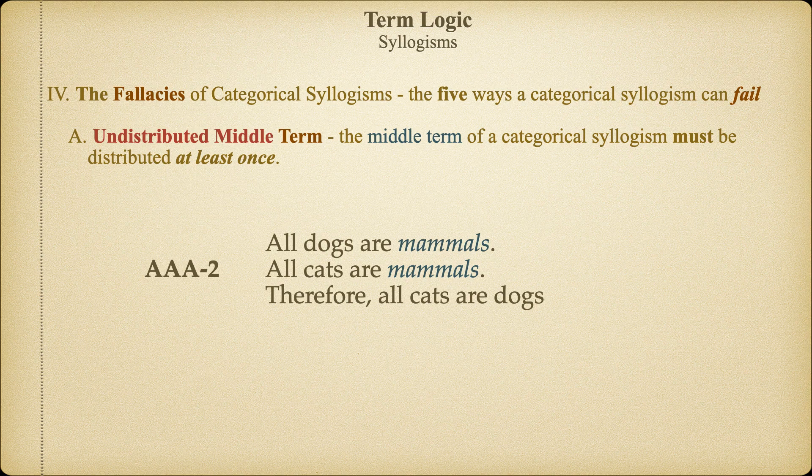If we were to construct other arguments with undistributed middle terms and did Venn diagrams for those syllogisms, we would find they are also invalid. Thus, we adopt the rule that a valid categorical syllogism must have a middle term that is distributed at least once. Failing to follow this rule will cause the syllogism to be fallacious.